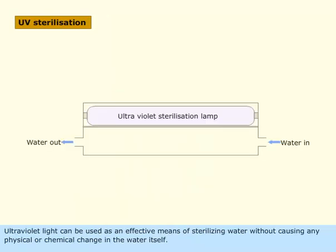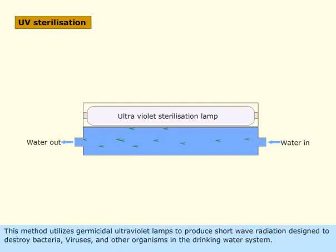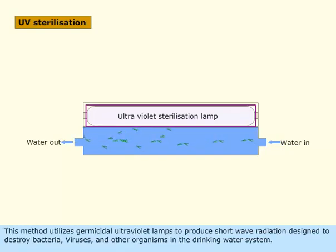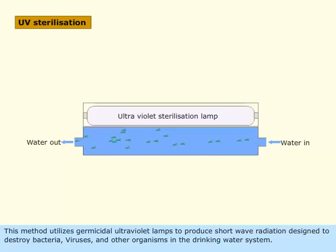Ultraviolet light can be used as an effective means of sterilizing water without causing any physical or chemical change in the water itself. This method utilizes germicidal ultraviolet lamps to produce short-wave radiation designed to destroy bacteria, viruses and other organisms in the drinking water system.